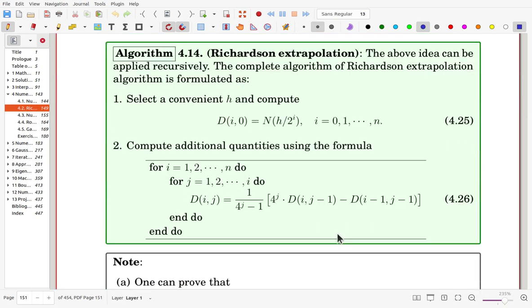Here, algorithm Richardson extrapolation. The above idea can be applied recursively. The complete algorithm of Richardson extrapolation is formulated as here. First, we select convenient h, and we try to compute the refined quantity. But now here, we are using second order, the same algorithm, but in the beginning, we try to use h, but now h over 2, and h over 4, and so on. And then, that will occupy the zeroth column of the matrix.